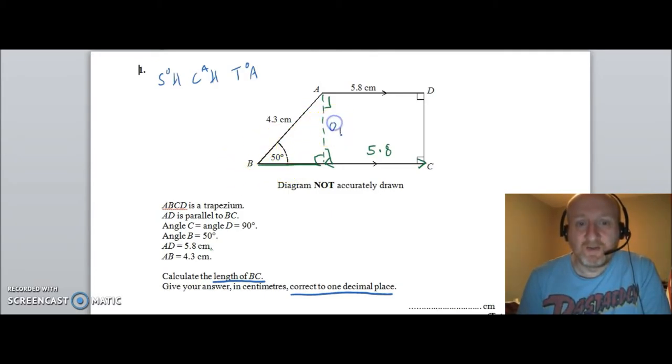So this would be the opposite. This would be the adjacent and this would be the hypotenuse. So I can see that I actually want the adjacent and I've got the hypotenuse and I've got an angle that lends itself directly to CAH.